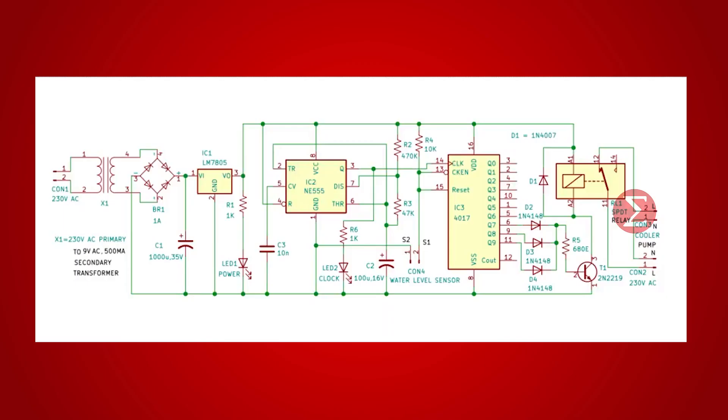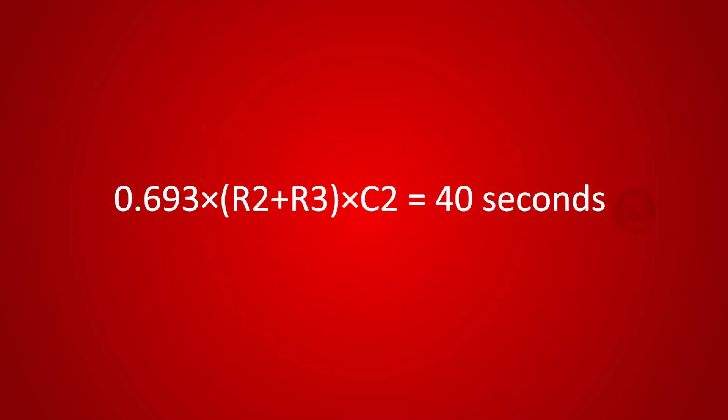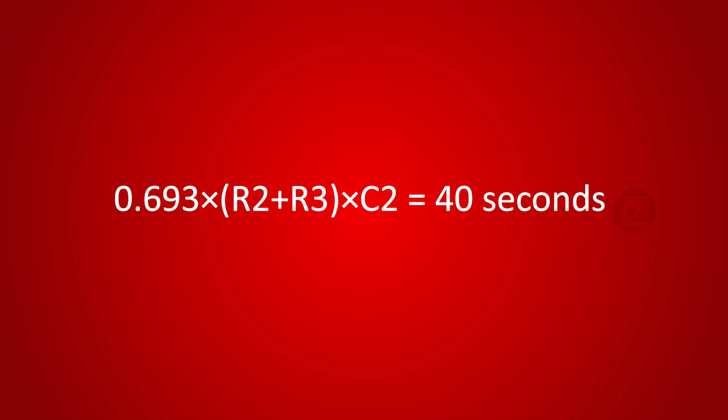You can see the values of R2, R3 and C2 in the circuit diagram and in the component list. It will come out to be approximately 40 seconds.